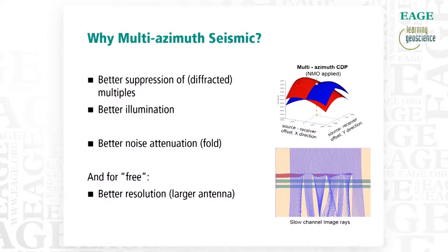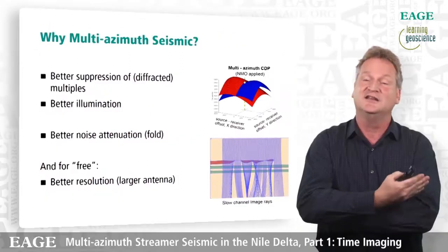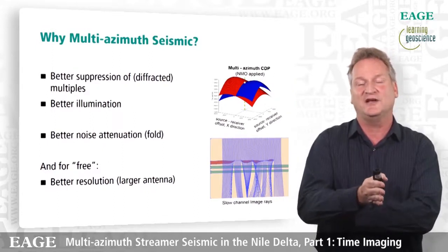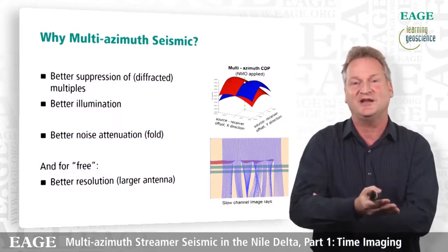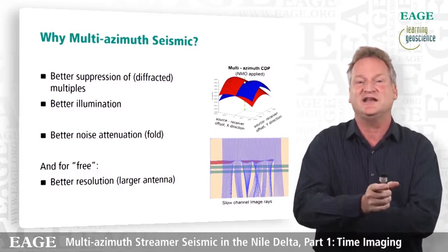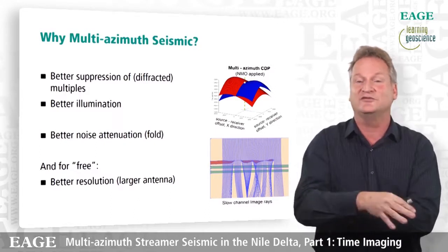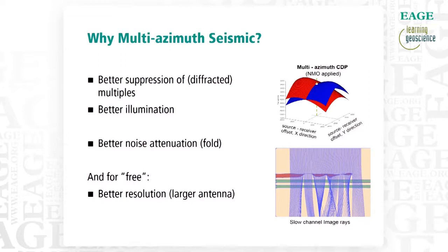So why did we think of multi-azimuth seismic? If you look at the image at the top right corner, you can see a CDP with a full-azimuth view of what a diffracted multiple looks like after NMO correction. The apexes of these diffractors sit at non-zero offset, which means they stack in. A single towed-streamer survey effectively samples one line through these surfaces, so those apexes stack in quite strongly. If you sample the whole surface and stack, you actually get far better suppression of these events, which is important since they're quite difficult to remove in processing.